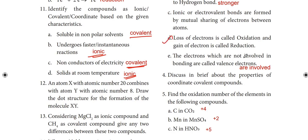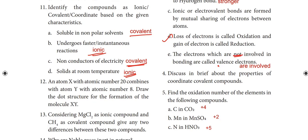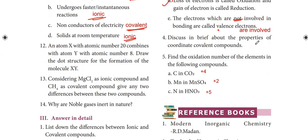D) 'Loss of electrons is called oxidation and gain of electrons is called reduction' — this statement needs to be verified. Also: 'The electrons which are not involved in bonding are called valence electrons' — this is incorrect, as valence electrons are those involved in bonding.